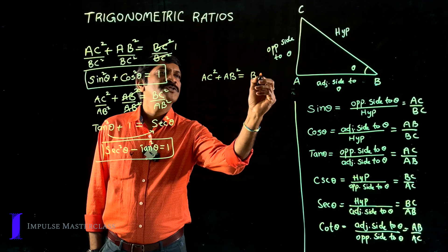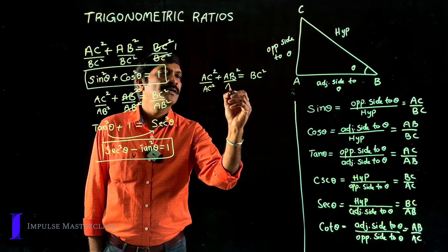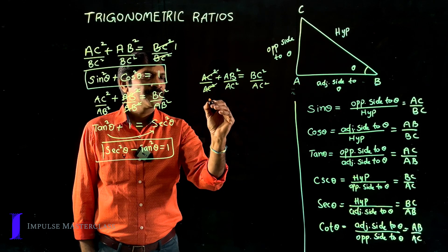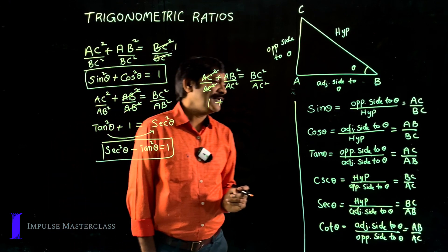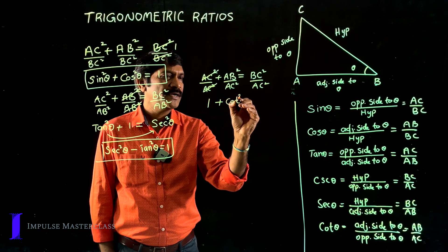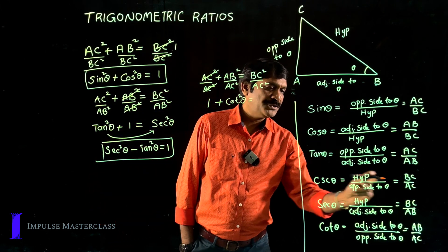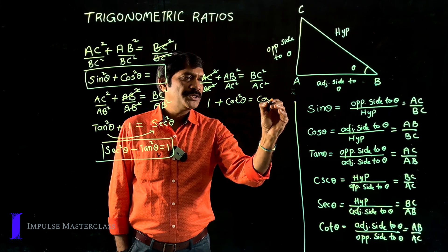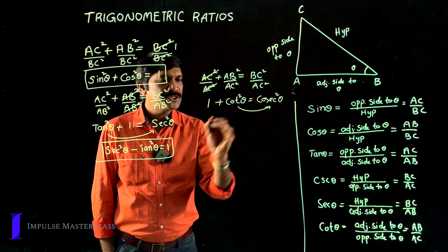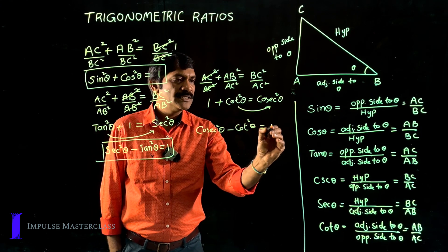Again taking the Pythagorean theorem AC² + AB² = BC² and dividing both sides by AC², AC² cancels. This gives 1 + (AB/AC)², where AB/AC is cot θ, giving cot²θ. And BC/AC is cosecant θ, giving cosec²θ. So 1 + cot²θ = cosec²θ, which rearranges to: cosec²θ − cot²θ = 1. This is our third trigonometric identity.